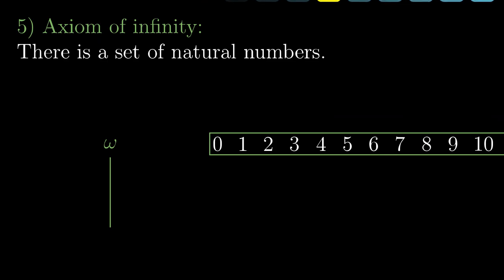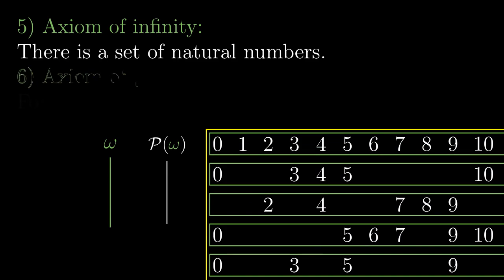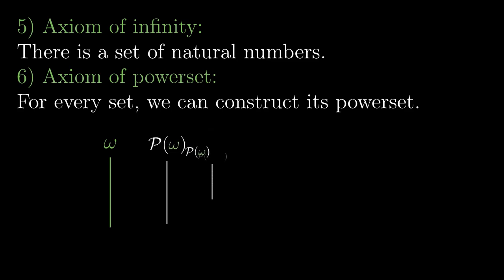Let's get back to our construction. The next step is constructing the power set, the set of all subsets. And that is exactly the next axiom. The axiom of power set states that for any set, we can construct its power set. Using this axiom over and over, we construct the entire sequence of larger and larger sets.